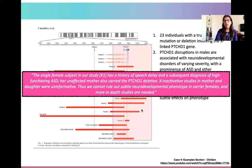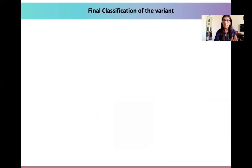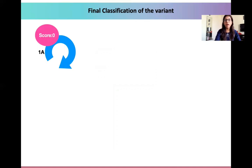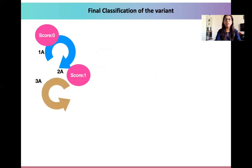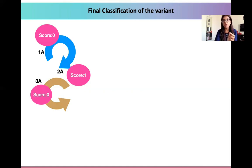They could not clearly rule out the subtle neurodevelopmental phenotype in females. Looking at the complete classification: in section 1A, the CNV contains protein coding genes, scoring 0. It overlapped with the dosage sensitivity map giving a score of 1 corresponding to section 2A. In section 3A, with only one protein coding gene, we gave a score of 0 as per the 0-24 genes criterion.